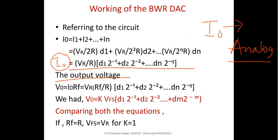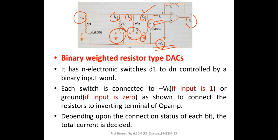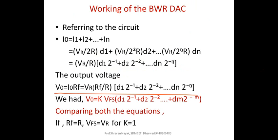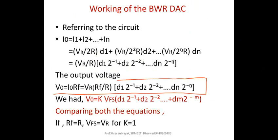The output voltage V0, which we are interested in, equals I0 times Rf. Therefore the output voltage can be written as Vr times Rf divided by R, multiplied by the remaining part: D1 times 2 to the power of minus 1, plus D2 times 2 to the power of minus 2, up to Dn times 2 to the power of minus N. This is the expression for the output voltage.